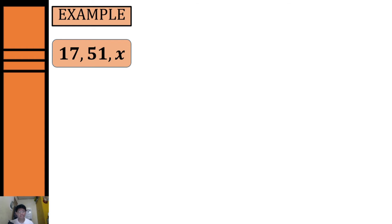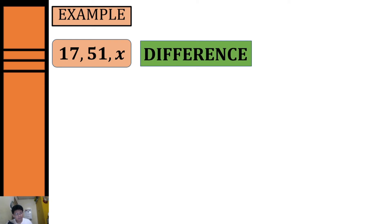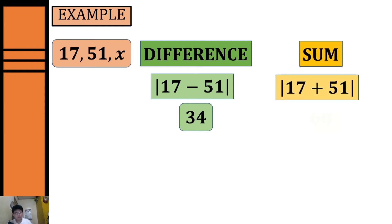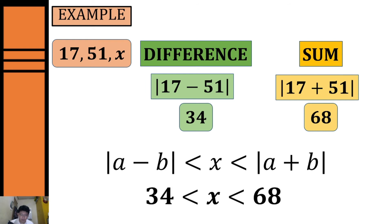Let's have another example. We're given 17 and 51 as the dimensions of our first and second side. To find the possible lengths of our third side, we get the positive difference: the absolute value of 17 minus 51 equals 34. Then we get the sum: 17 plus 51 equals 68. So the possible range for our third side will be between 34 and 68.